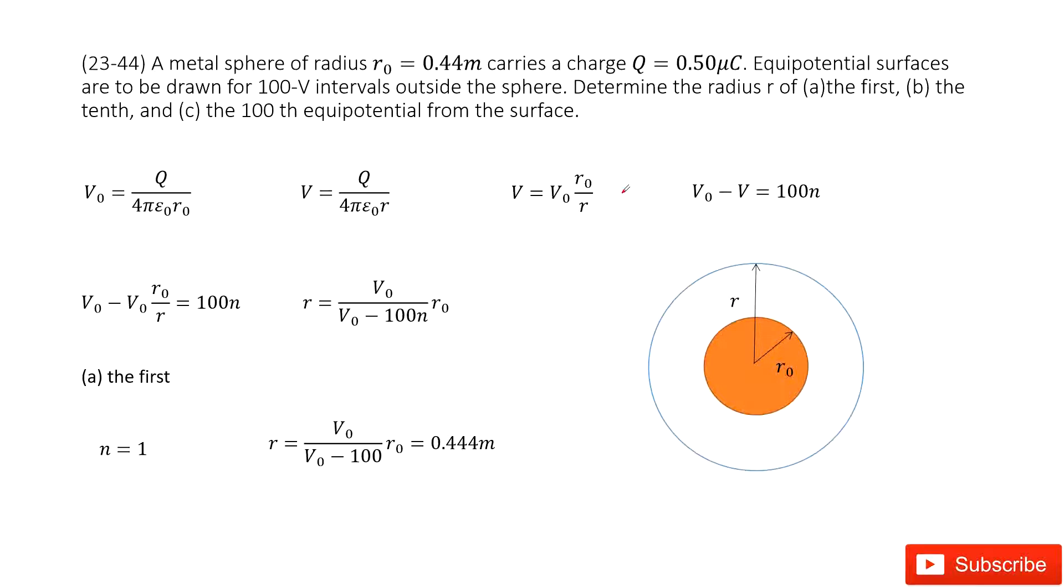We can see we have a metal spherical object there. The radius is given R0 and it carries the charge Q is given. And also we know we can draw the equipotential surface.